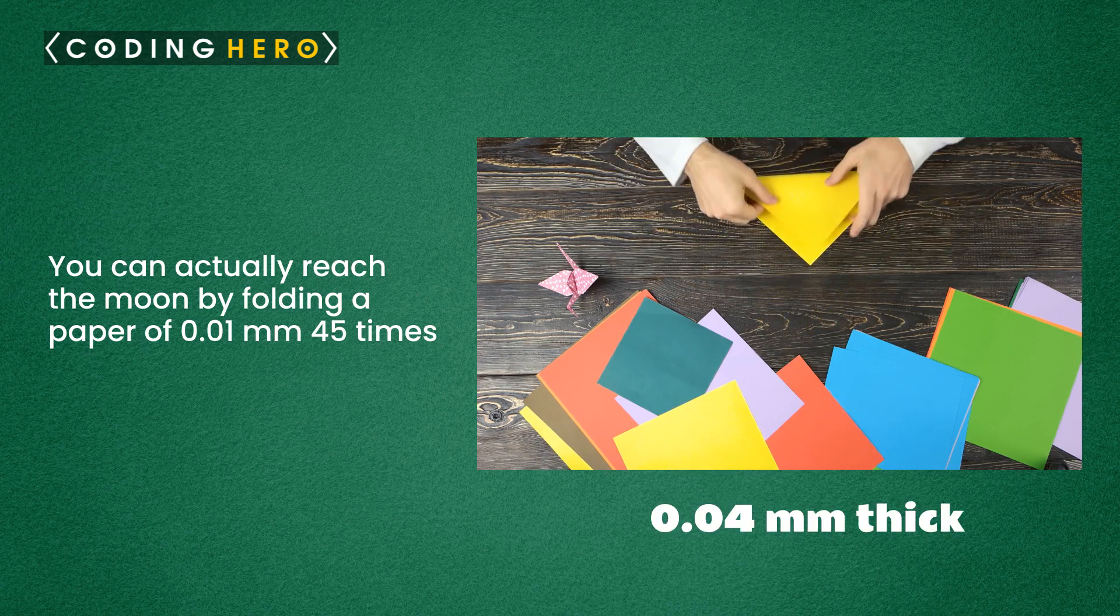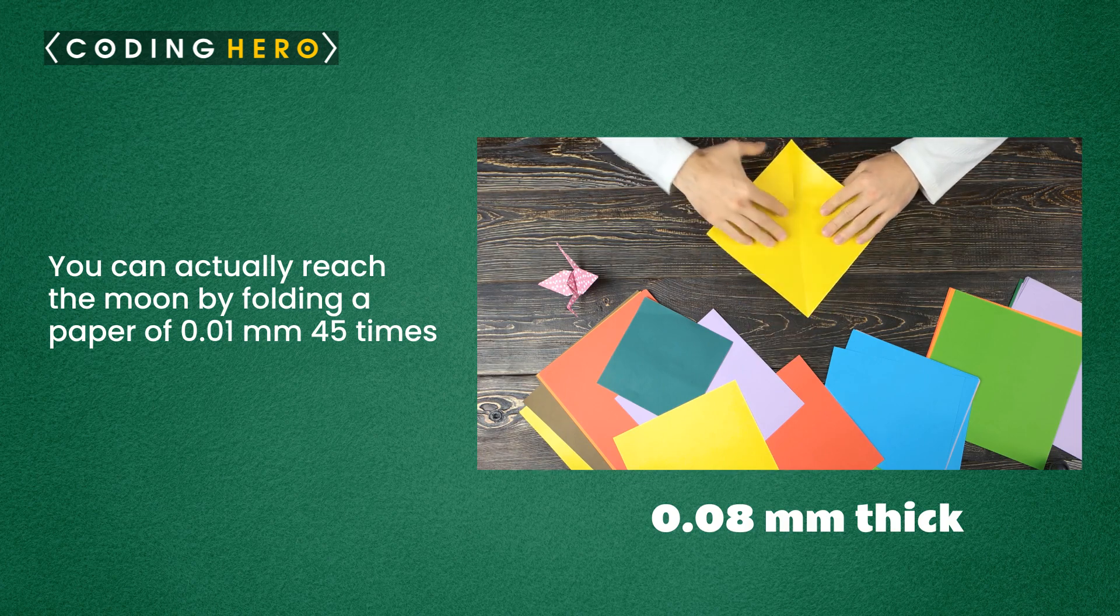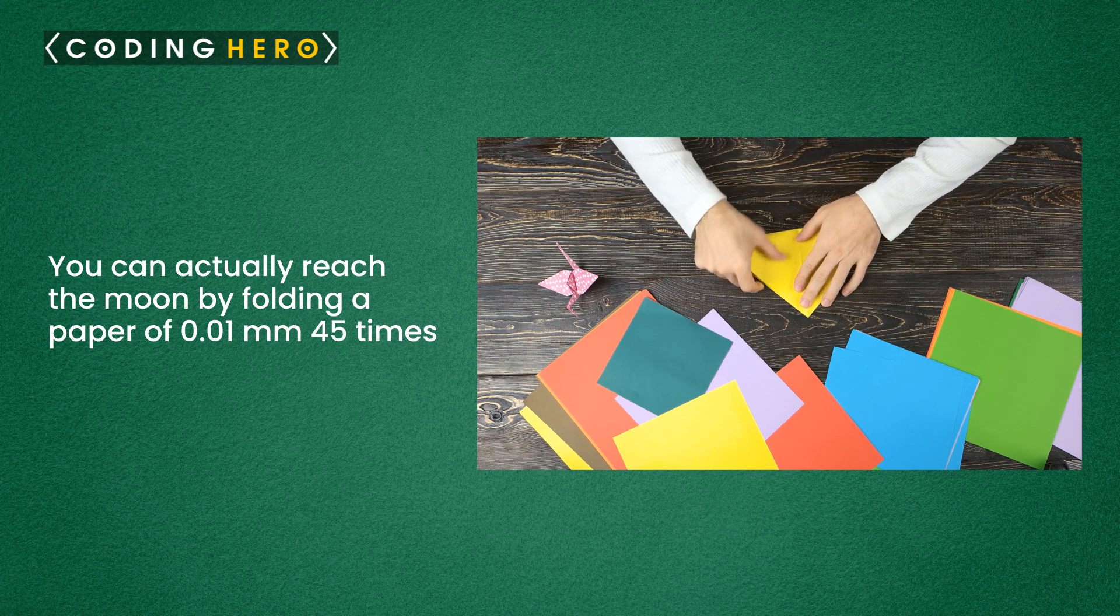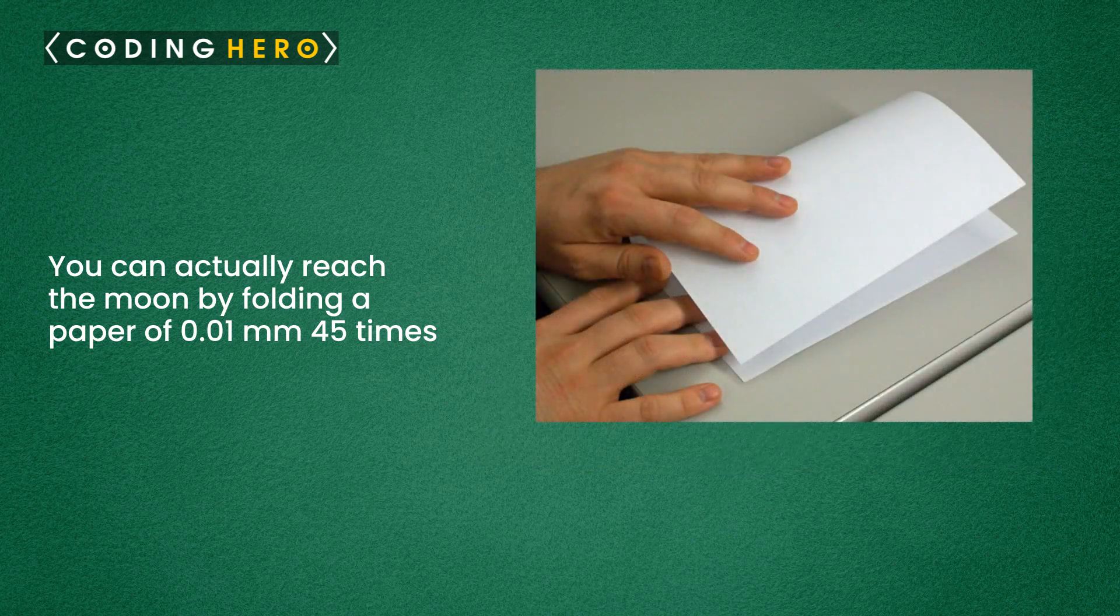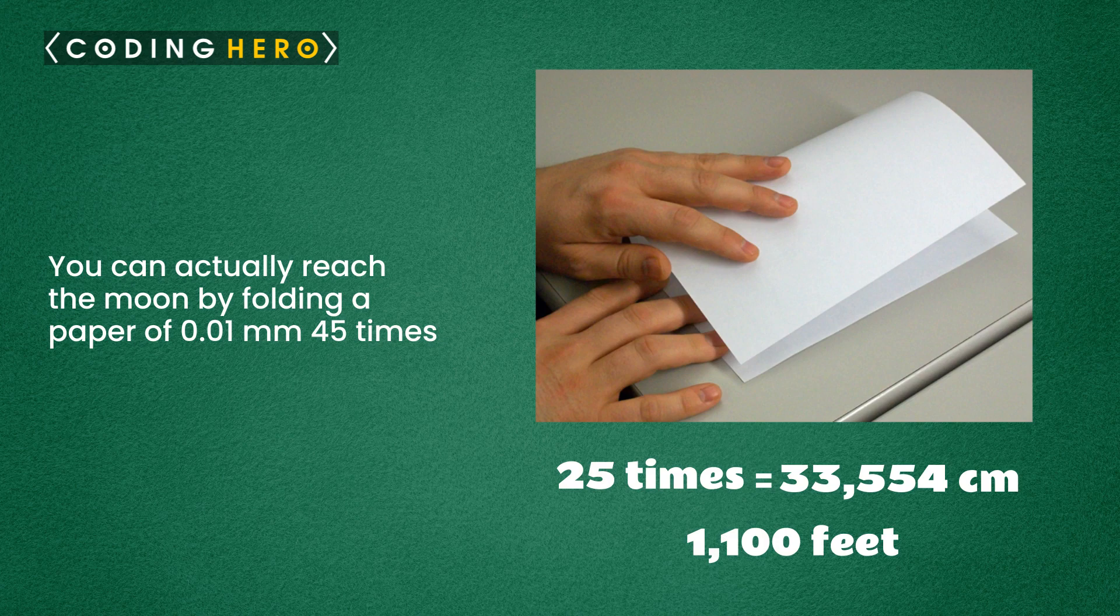If we fold it one more time, it is 0.04 millimeter thick. If we fold it one more time, it is now 0.08 millimeter thick. Do you notice the pattern? Every time we fold the paper, it gets twice as thick. If we're able to fold it 25 times, then we would get 33,554 centimeters, that equals over 1,100 feet.